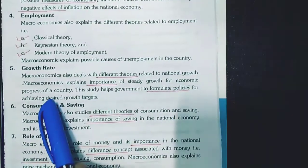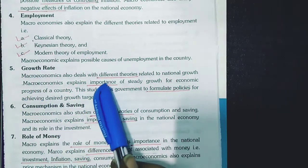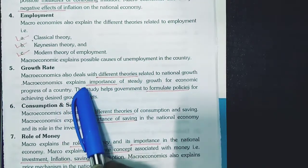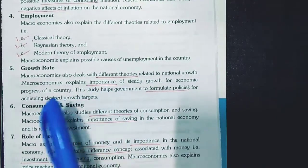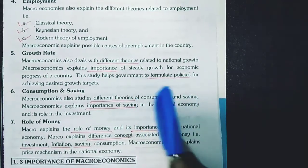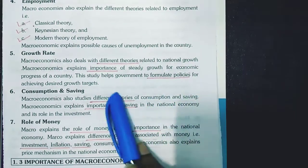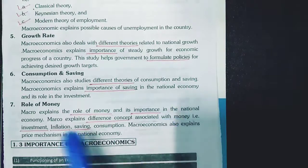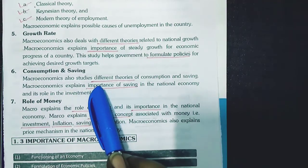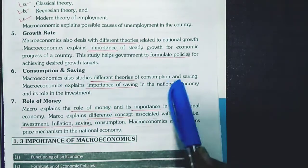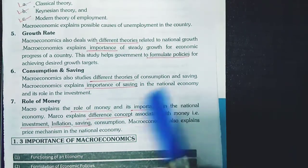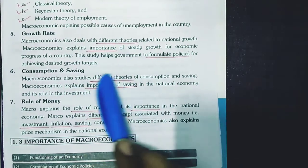The fifth point is growth rate. Macroeconomics deals with different theories of growth, explains the importance of growth, and helps in formulating policies to achieve a higher growth rate. The sixth point is consumption and savings. Macroeconomics studies the different theories of consumption and savings, and also states the importance of saving for the nation.